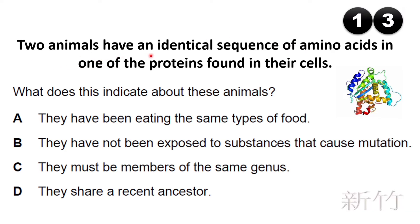Two animals have an identical sequence of amino acids in one of the proteins found in their cells. What does this indicate about these animals? Options include: they have been eating the same food; they have not been exposed to mutation-causing substances; they must be members of the same genus; or they share a recent common ancestor. When we compare proteins to determine relationships, the answer is that they share a recent common ancestor.